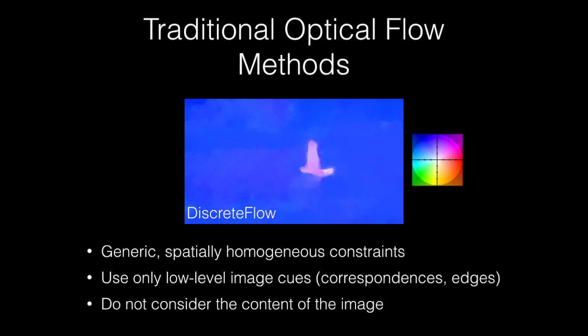Here, we show the flow estimation of the state-of-the-art method DiscreteFlow. The direction of the motion is encoded by color, according to the wheel, and the magnitude by saturation. As we can see, the motion is blurry and unsatisfactory, especially in motion boundaries and in untextured regions.